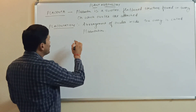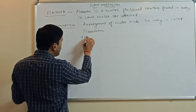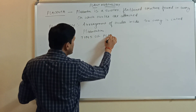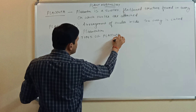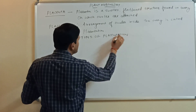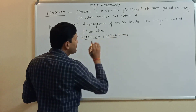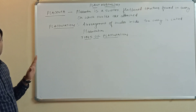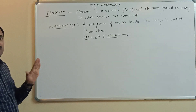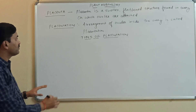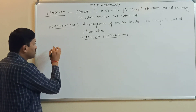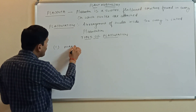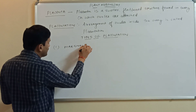Now you must know about the types of placentation. There are a total of six types of placentation. The very first one is marginal placentation.